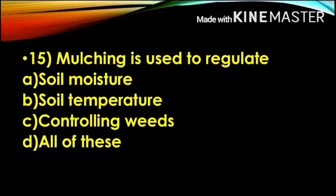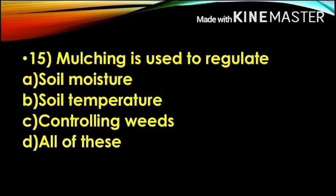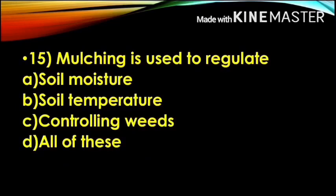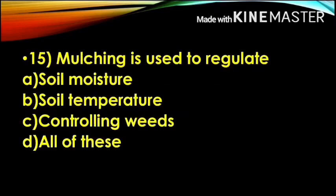Next question: Mulching is used to regulate — Option A, Soil Moisture; Option B, Soil Temperature; Option C, Controlling Weeds; Option D, All of These. The correct answer is Option D, All of These. Mulching involves covering the soil surface with leaves or soil dust. It prevents evaporation, regulates soil temperature, maintains moisture, and controls weeds.